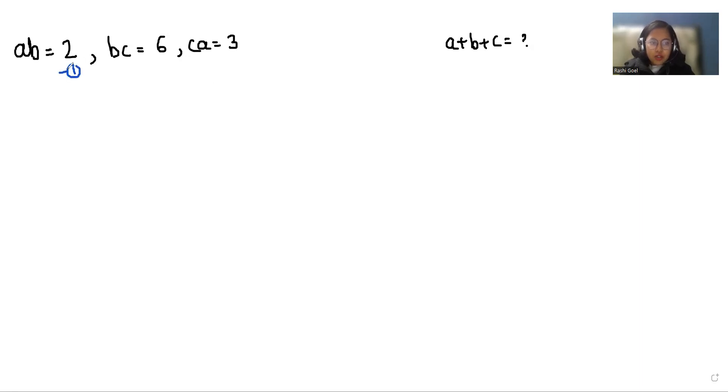So first I'm considering this as equation number one, this as two, and this is third. So first I'm going to multiply first and third equation. So we get AB times CA, that is 2 times 3, that equals 6. So A squared BC equals 6.